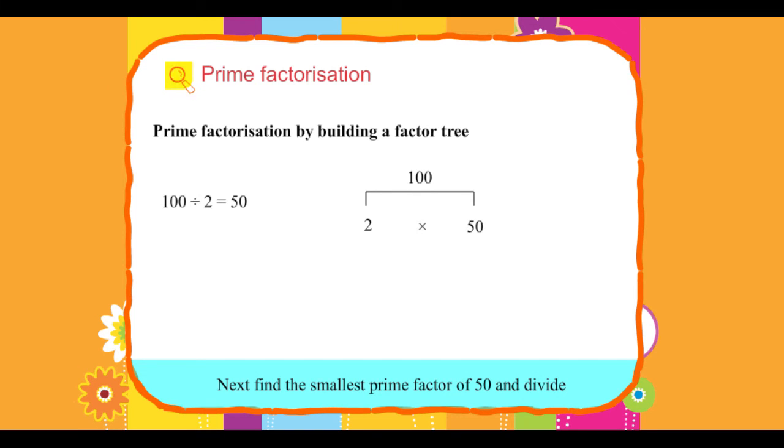Next, find the smallest prime factor of 50 and divide. 50 divided by 2 equals 25.